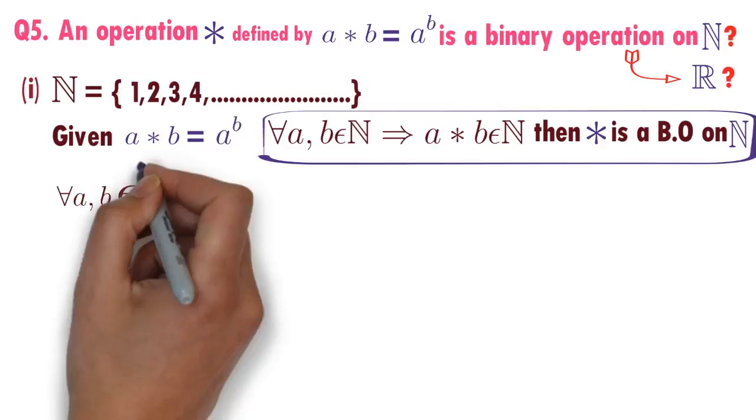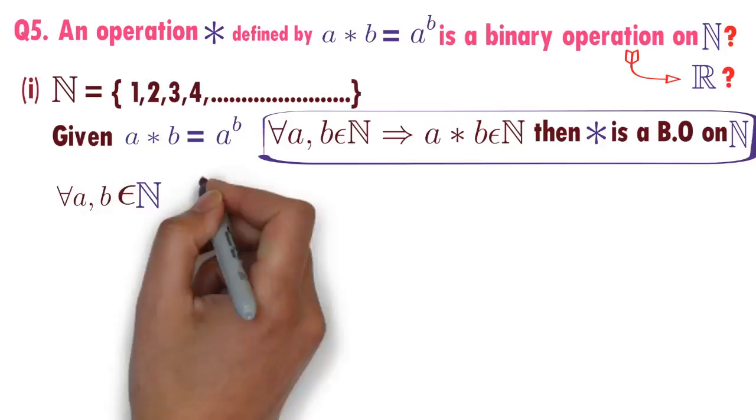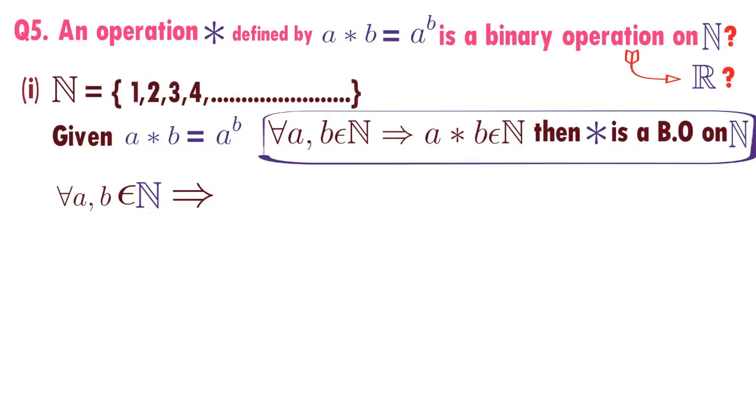I will take two natural numbers A comma B. Now you think of A power B. A is natural number, B is natural number. What is A power B? See, 2 cube is 8, 3 cube is 27, 2 square is 4. If A is natural number, B is natural number, A power B, A star B is also natural number.